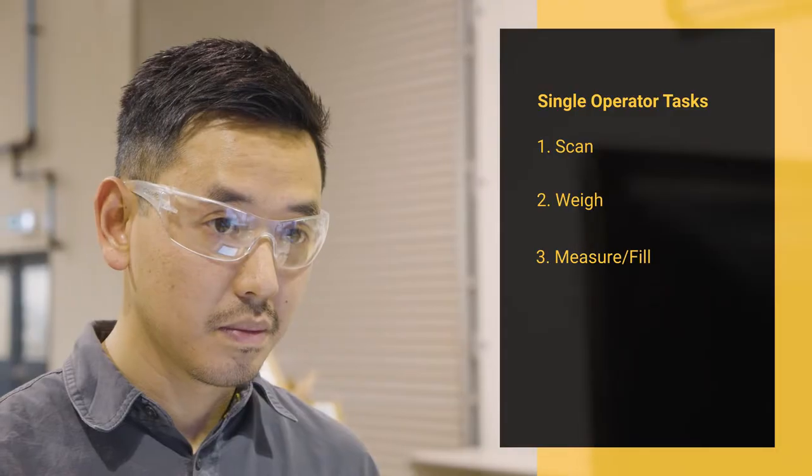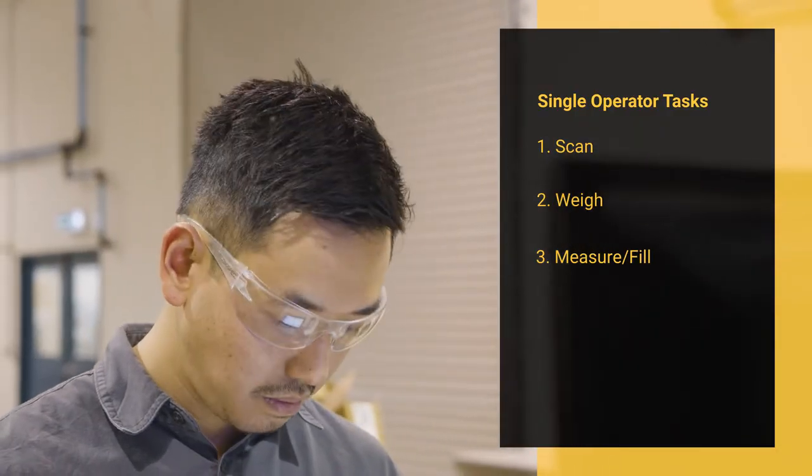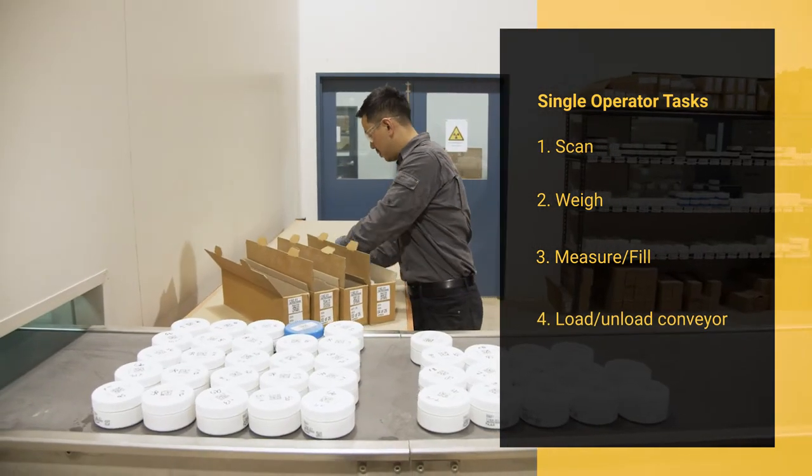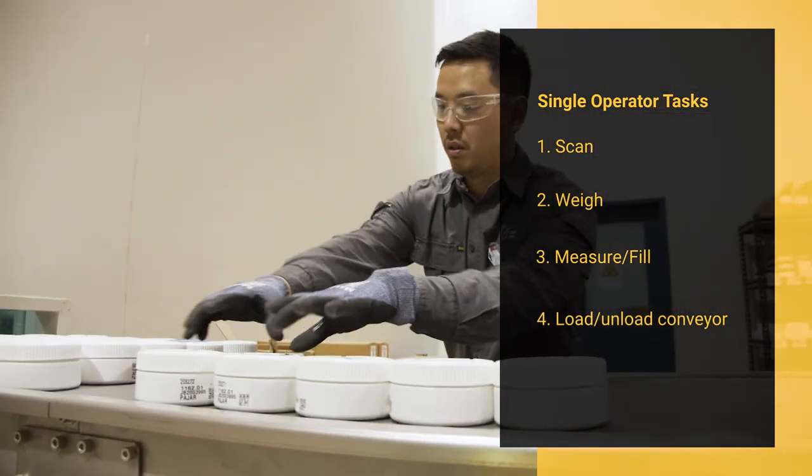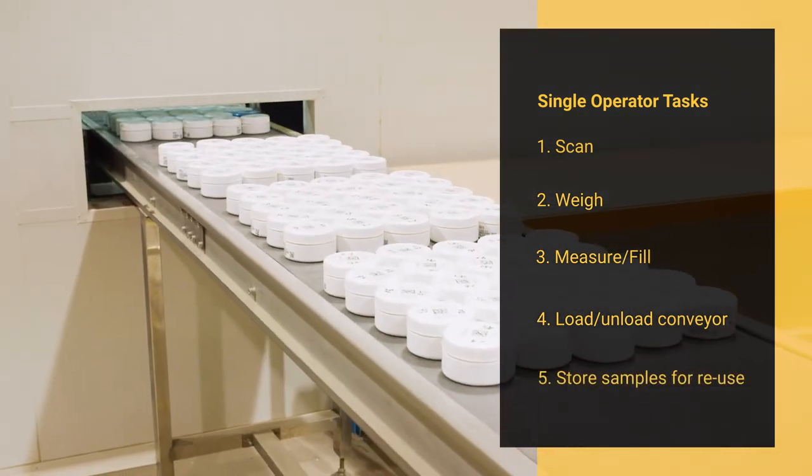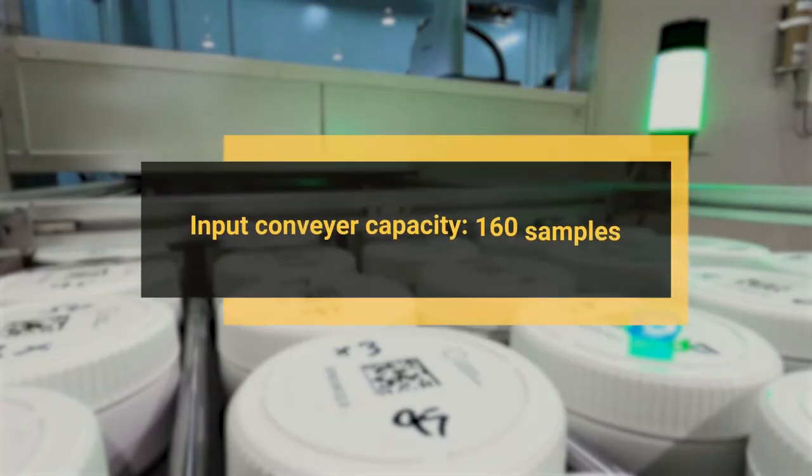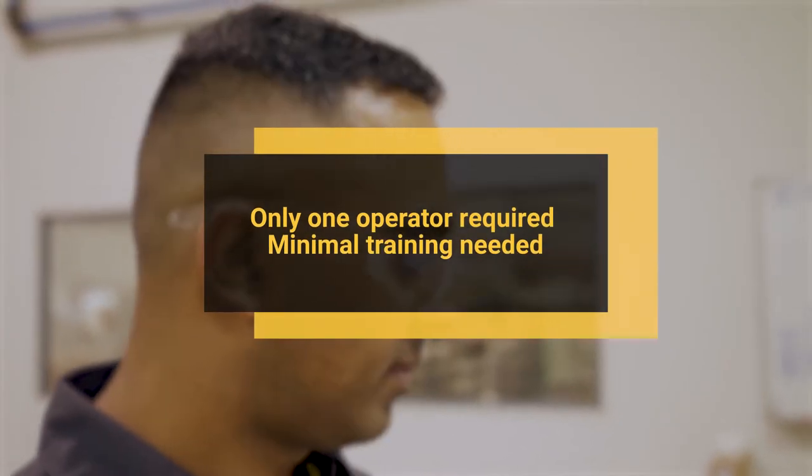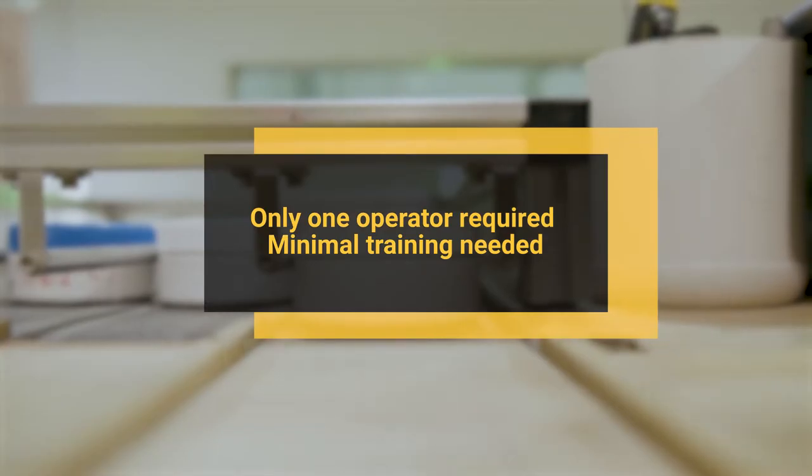During normal operations, the photon assay unit runs fully automatically and requires no intervention beyond a single operator loading and unloading samples onto the input and output conveyors. The input conveyor itself has a capacity of 160 samples. Additional samples may be added by the sole operator at any time when the system is running.